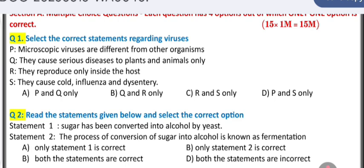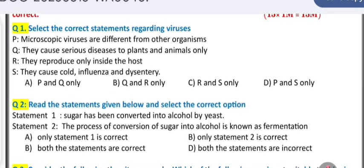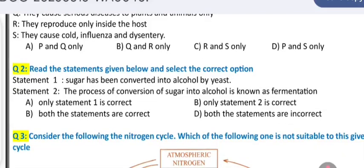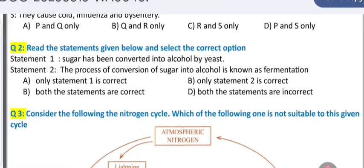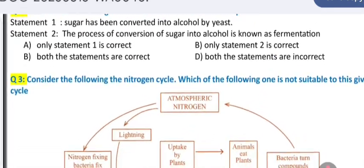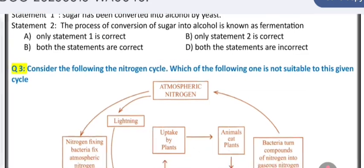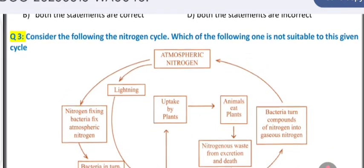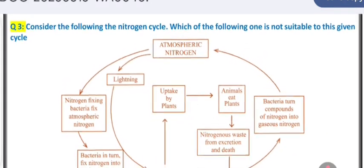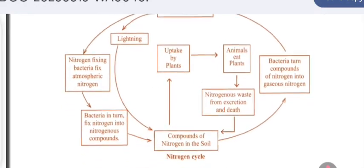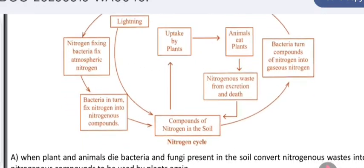The first question is: select the correct statement regarding viruses. Read the statements given below and select the correct option. The second question is: consider the following nitrogen cycle — which of the following is not suitable to the given cycle? You can take a screenshot and observe it carefully.